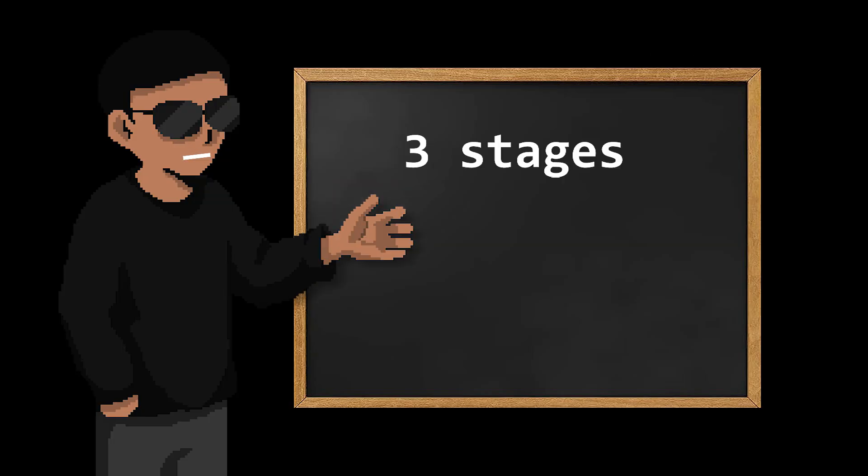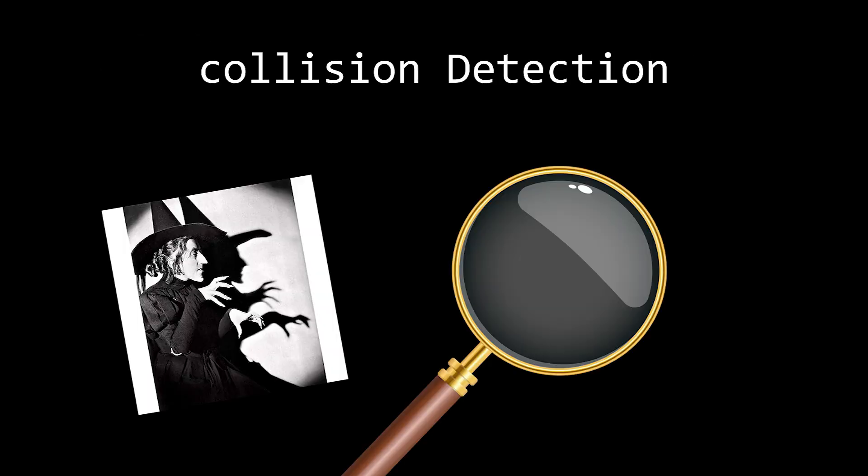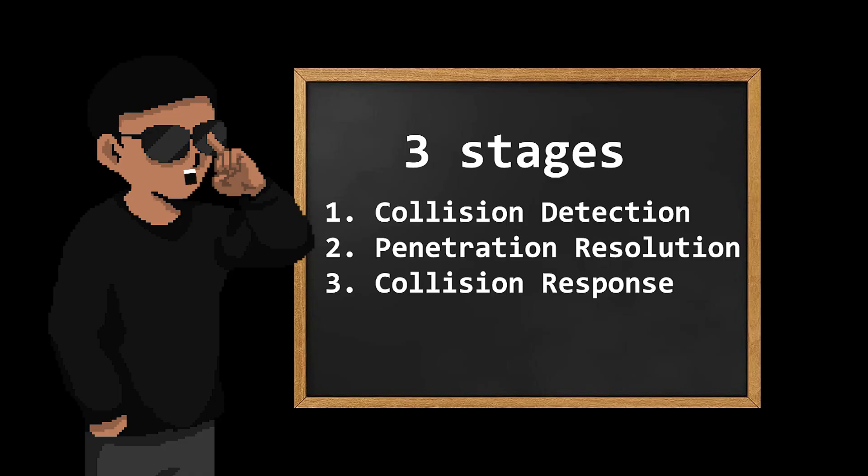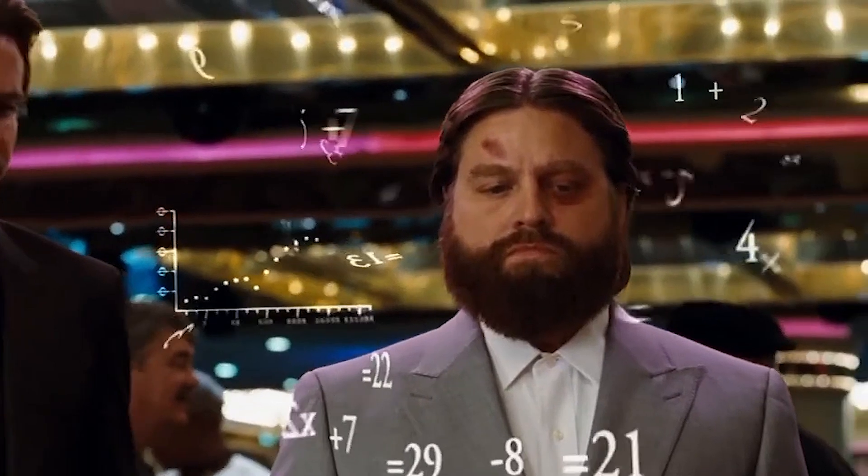Collisions are divided into three stages. Collision detection which determines if there is a collision, penetration resolution which keeps them from phasing through each other, and finally collision response which determines how objects react after collision. The first two are pretty straightforward to implement. The collision response however is a bit complicated. This is what it looks like without any collision response.